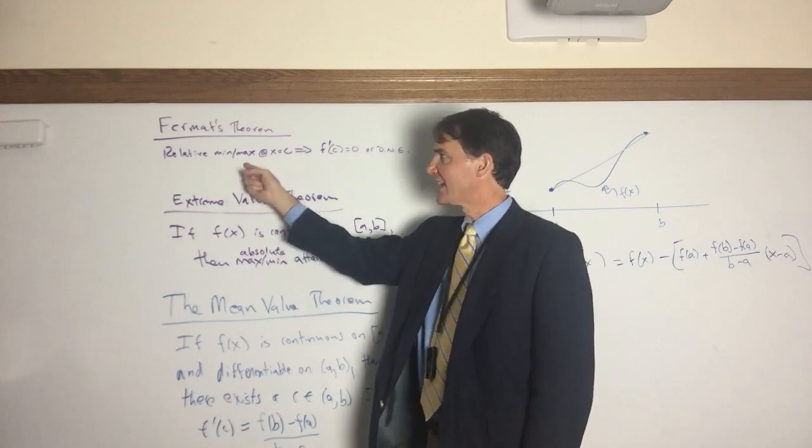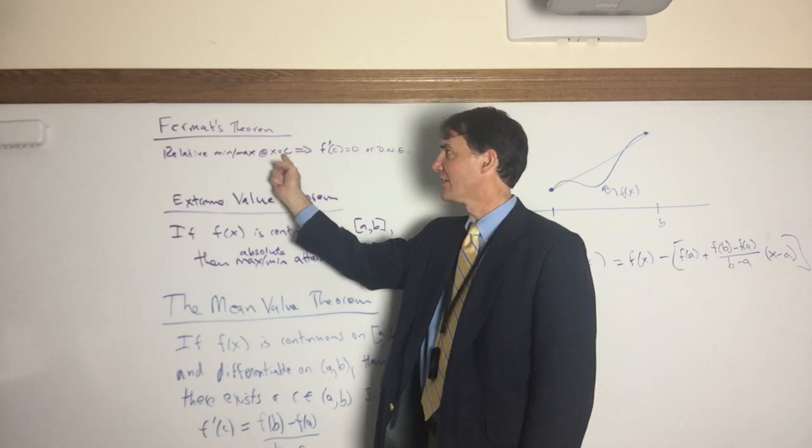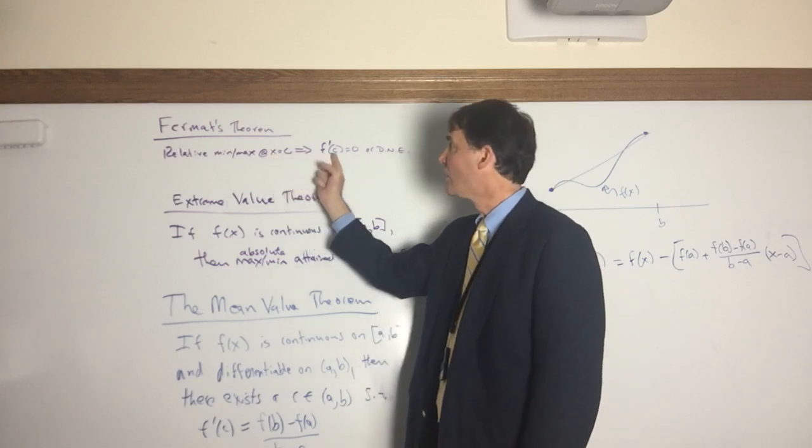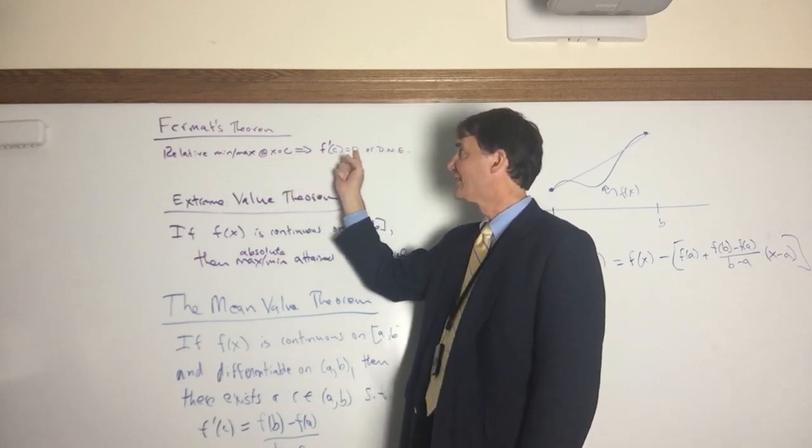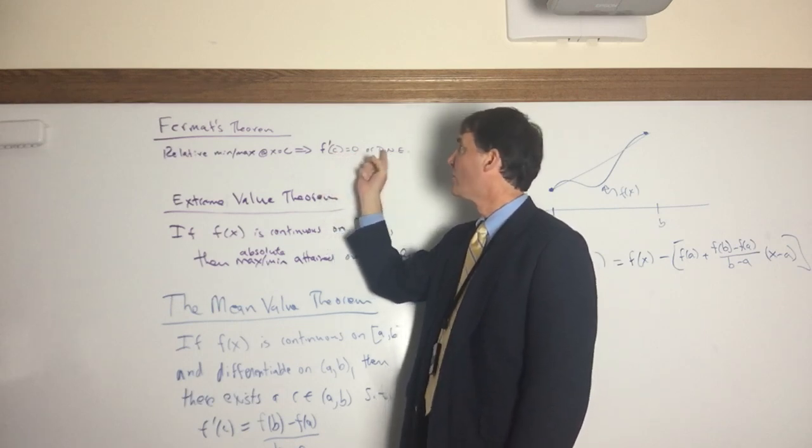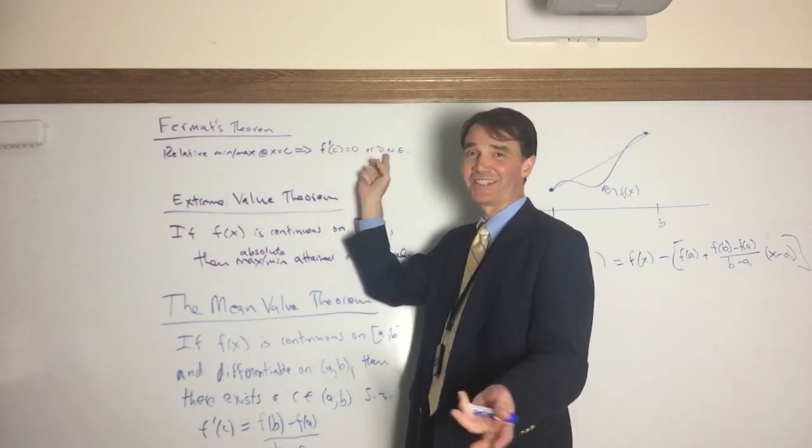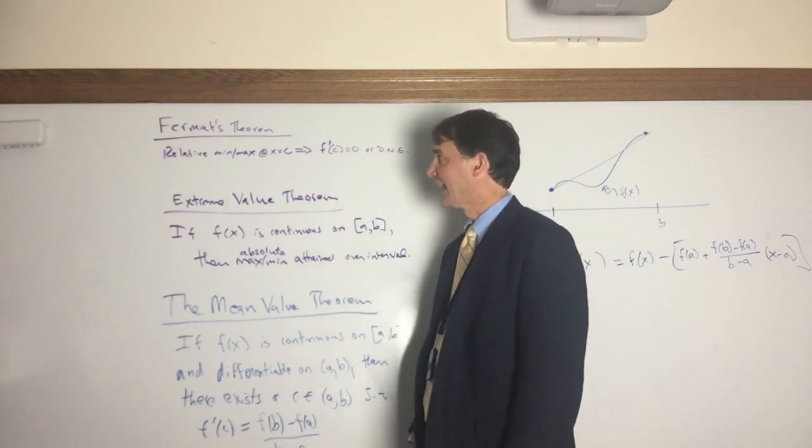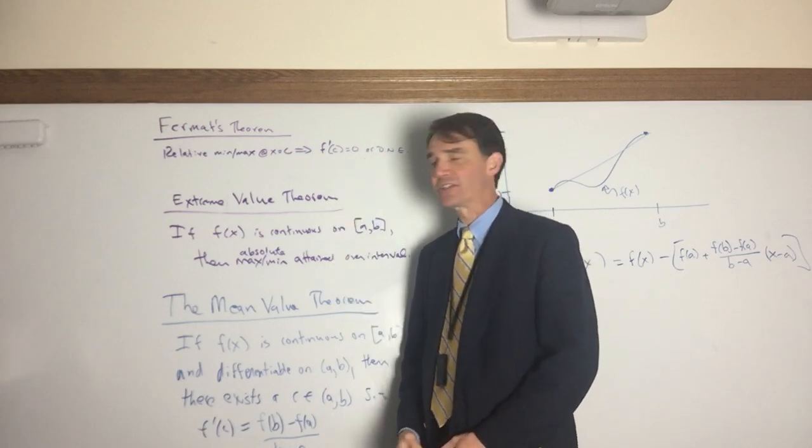Remember, Fermat's theorem just says that if you have a relative min or max on a function at some domain value x equals c, then we know the derivative of the function there is zero if it exists. So either f'(c) is zero or f'(c) doesn't exist if at x equals c there's a relative min or max for the function.